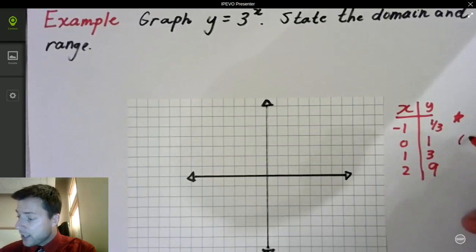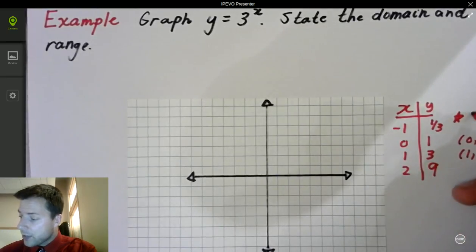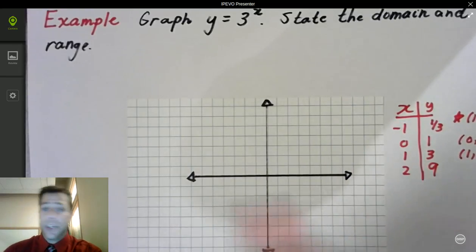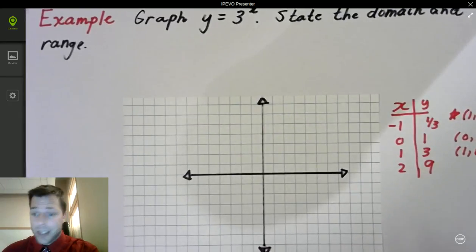And remember the key points. There is 0, 1, right? Here is 1, b. And then there was negative 1, 1 over b right there. So there they are. You can get them from a table of values or you can try to memorize the key points. It's up to you.